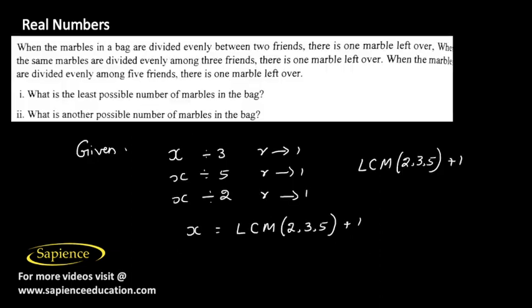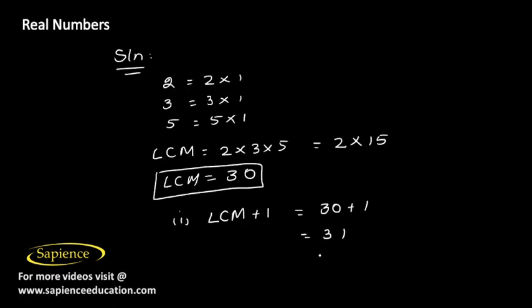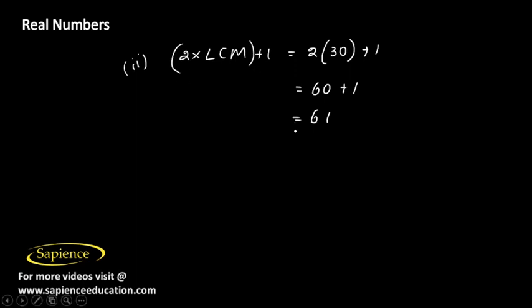So 31 is the least possible number of marbles in the bag. Now what is another possible number of marbles in the bag? For another possible number we can take any multiple of LCM and just add 1 to it. As long as the multiple of LCM is there it will get divided and remainder will be 0, but if you add 1 to that factor we will get remainder 1. So for the second part we can take 2 times LCM plus 1, which is equal to 2 times 30 plus 1, which is 60 plus 1, which is 61. We can also take 3 times LCM plus 1, in that case we will get 91 as the answer. Or we can take 4 times LCM, in that case we will get 121 as the answer, and all those answers are correct.